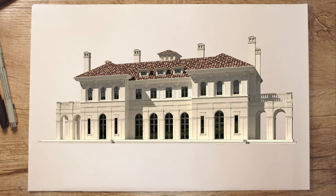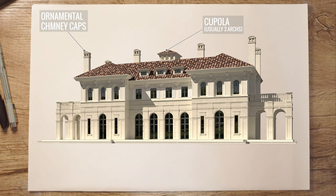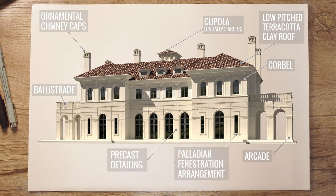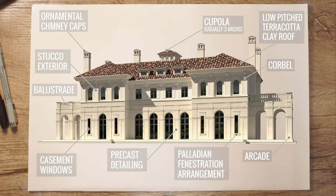Some characteristics and moves that I wanted to implement in this house were ornamental chimney caps, a cupola which has three arches — this is very common. We have corbels, a balustrade above those porticos to create balconies off the second floor, a low pitch terracotta clay roof, and those arcade-like porticos on each side. I included precast detailing all along the first floor, and on the reverse hips we have a Palladian fenestration arrangement — basically an arced window or door with two flanking windows on the left and right. Then we have stucco on the second floor, casement windows throughout, and shutters on just these four windows on the second floor.